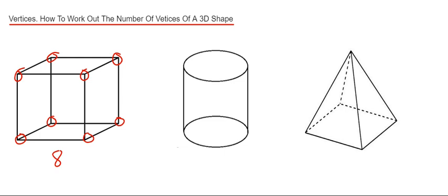Next, our cylinder. On a cylinder, we don't have any sharp corners, so we have zero vertices.